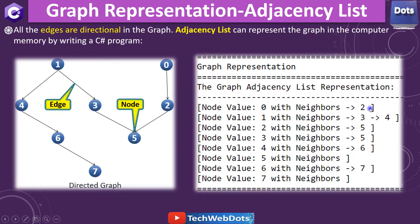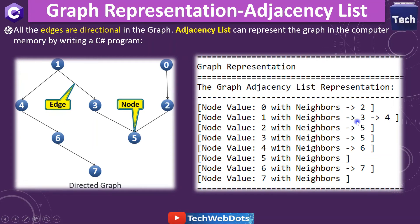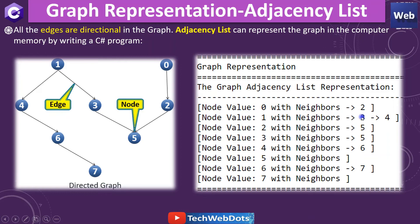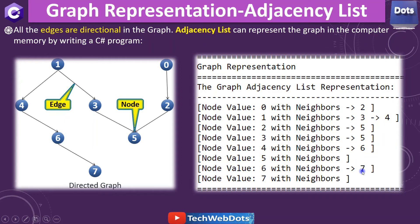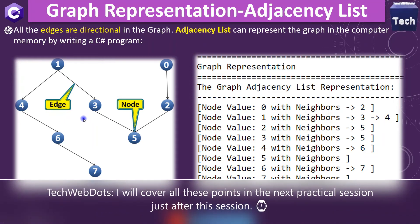In the adjacency list, we represent node 0 with neighbor 2 — here is the node and here is its neighbor. Node 1 is associated with neighbors 3 and 4. Similarly, for nodes 0 to 7 we have all the associated adjacent vertices listed. This is how we can transform this graph into computer memory.